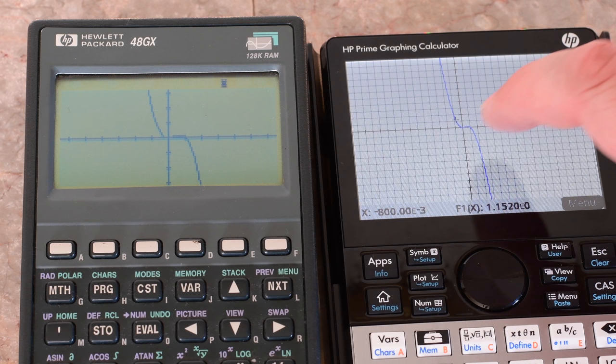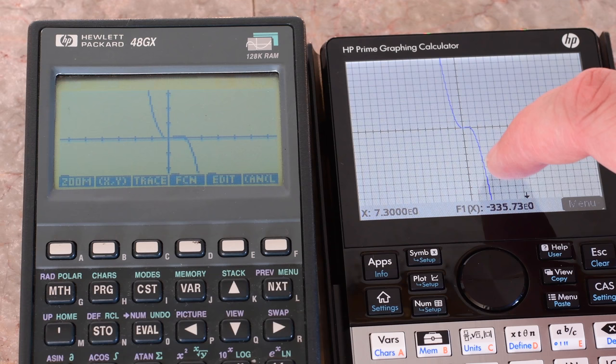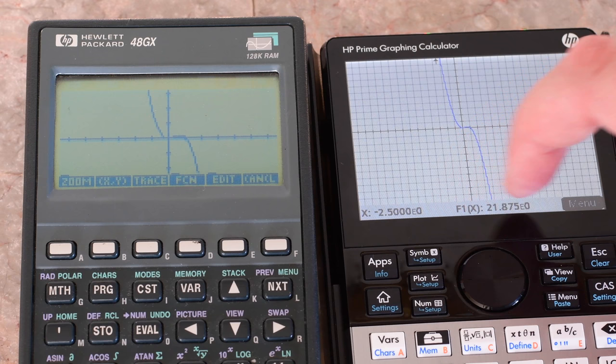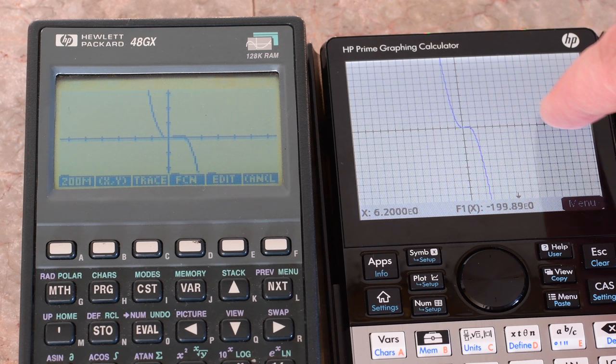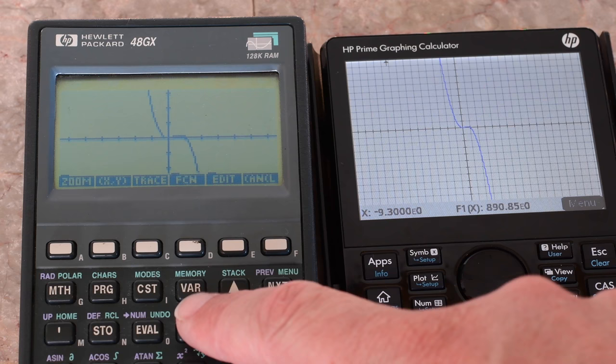Now something else cool with the Prime is because this has this touch screen. You can do things like this and tap. And you see it says when x is 7.3, the function is negative 335. Or x is negative 2.5, the function is 21.875. So you can sort of tap around and see what the function is at different areas.